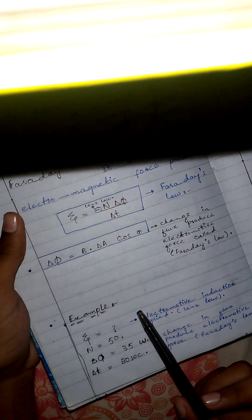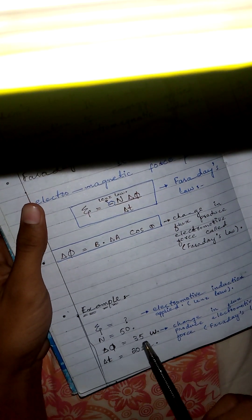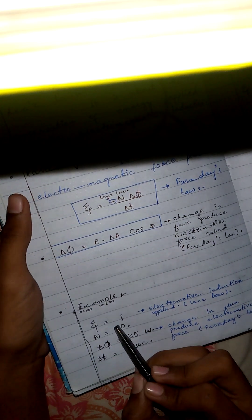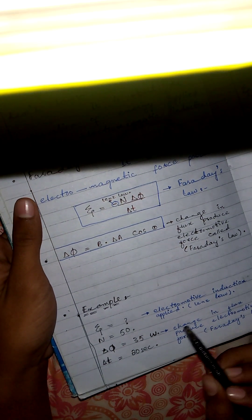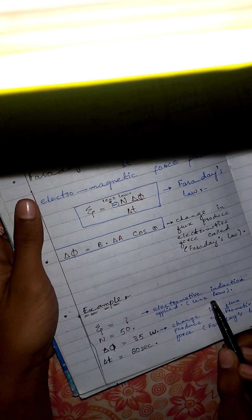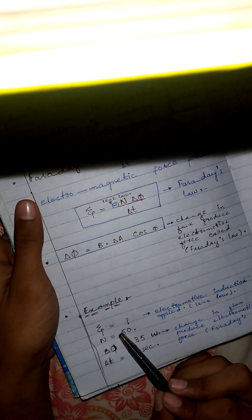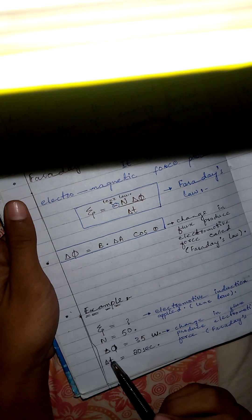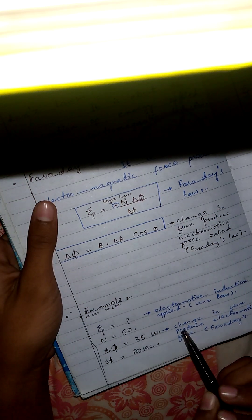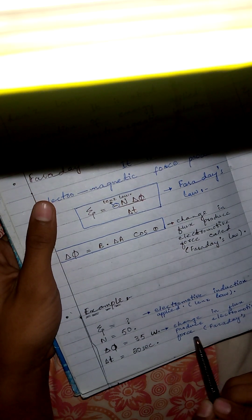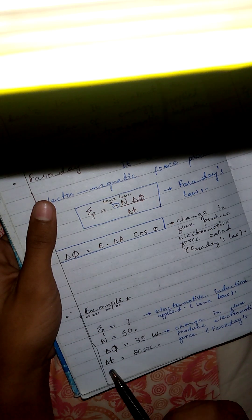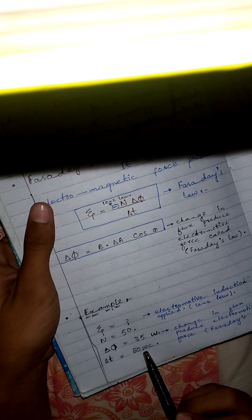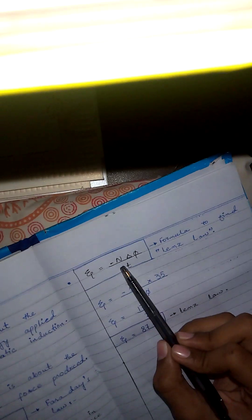The simple definition is: Lenz's law is about the conservation of energy applied to electromagnetic induction. Now we have an example. The number of turns is 50, the change in flux is 35 weber — which is the Faraday's law part — and the change in time delta t is 20 seconds.